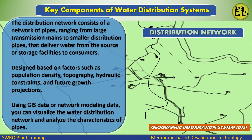The distribution network consists of a network of pipes, ranging from large transmission mains to smaller distribution pipes, that deliver water from the source or storage facilities to consumers. It is designed based on factors such as population density, topography, hydraulic constraints, and future growth projections. Using GIS data or network modeling data, you can visualize the water distribution network and analyze the characteristics of pipes.